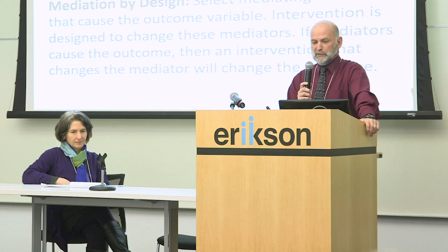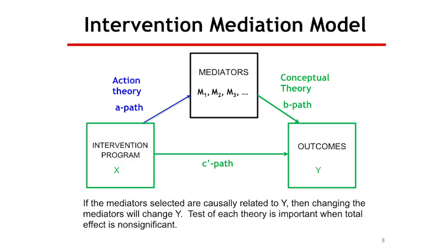In the diagram, we have the intervention causing the mediator via the A path — called action theory — which refers to the theory for what manipulation would change the mediator. Then we have conceptual theory, which is our theory for what are the causes of the outcome. Usually we know a lot about conceptual theory; there are whole books on what predicts the outcome. There is very little on action theory — what actions we can take with our manipulation that would change the mediator.